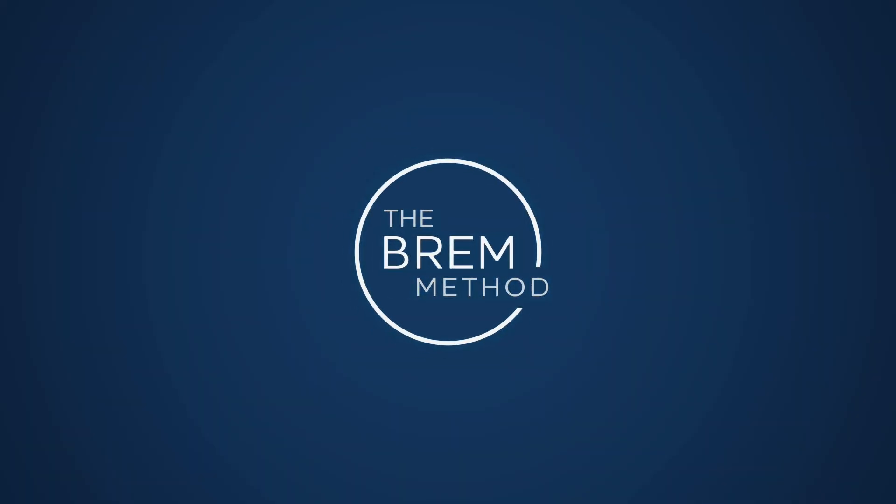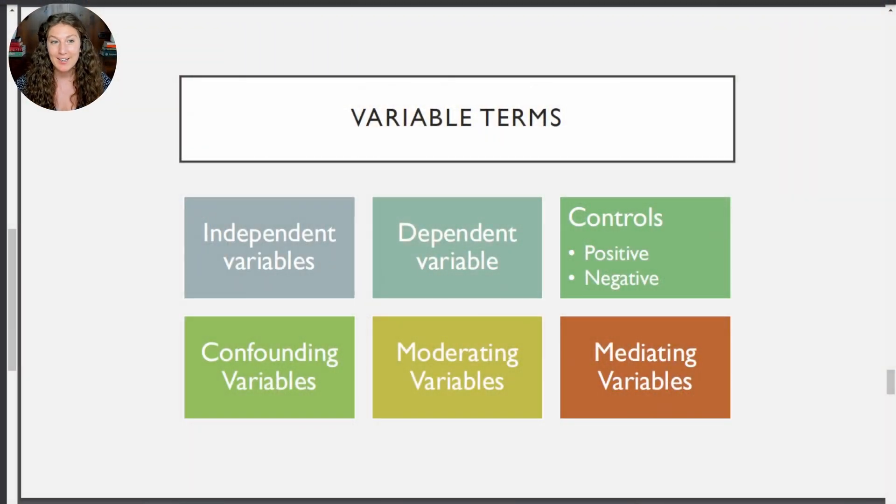Hey everyone! This video is actually part of a series that I teach at institutions for MCAT skills like research design and critical reasoning. The format is a little different than our usual YouTube videos, but I found it to be very valuable for students, so I hope you enjoy. In this video, we're going to cover all of the variable terms that can come up in research design and in science-based passages. Here are the six major terms that can come up, and the first four are much more common than the last two, so we're going to start there and work our way through the definitions.